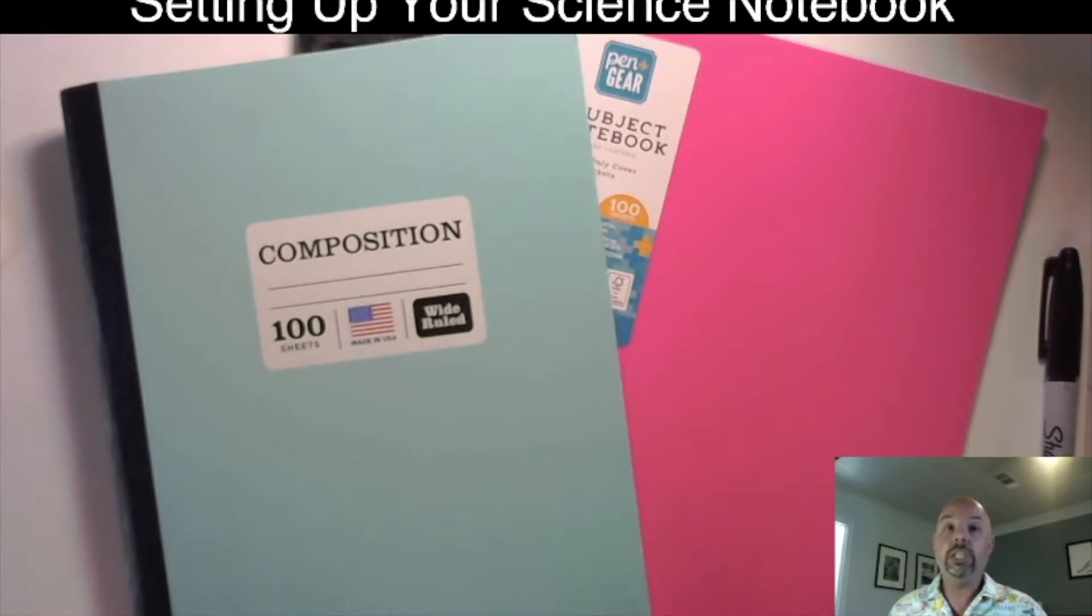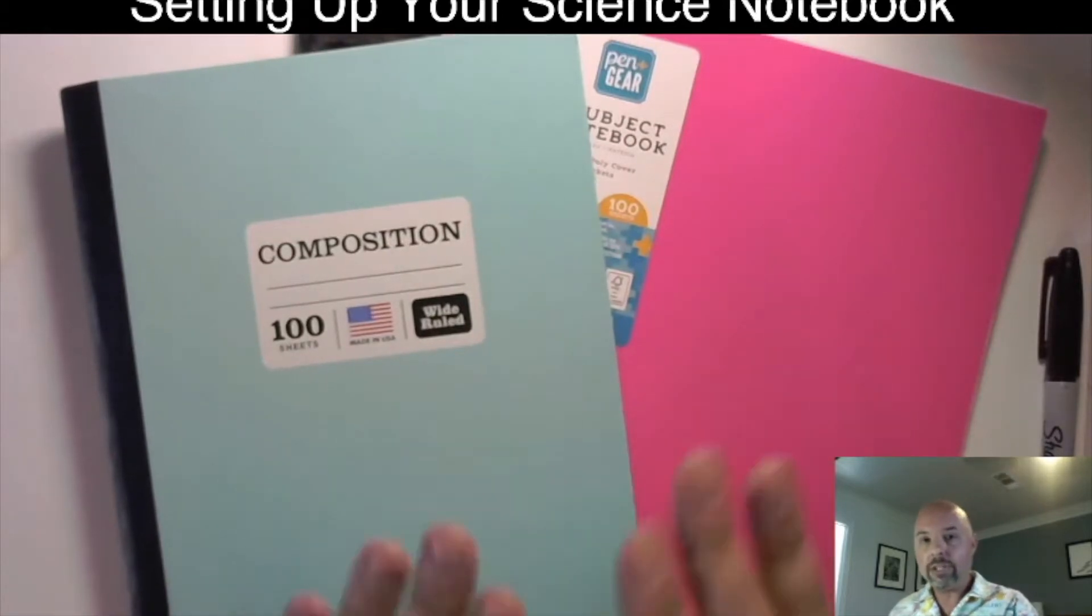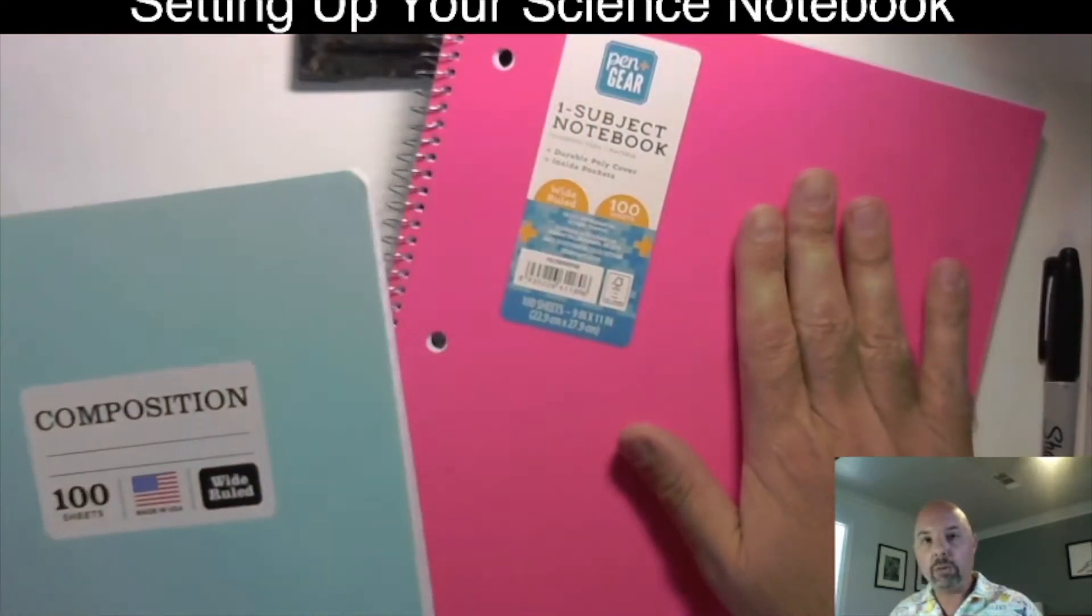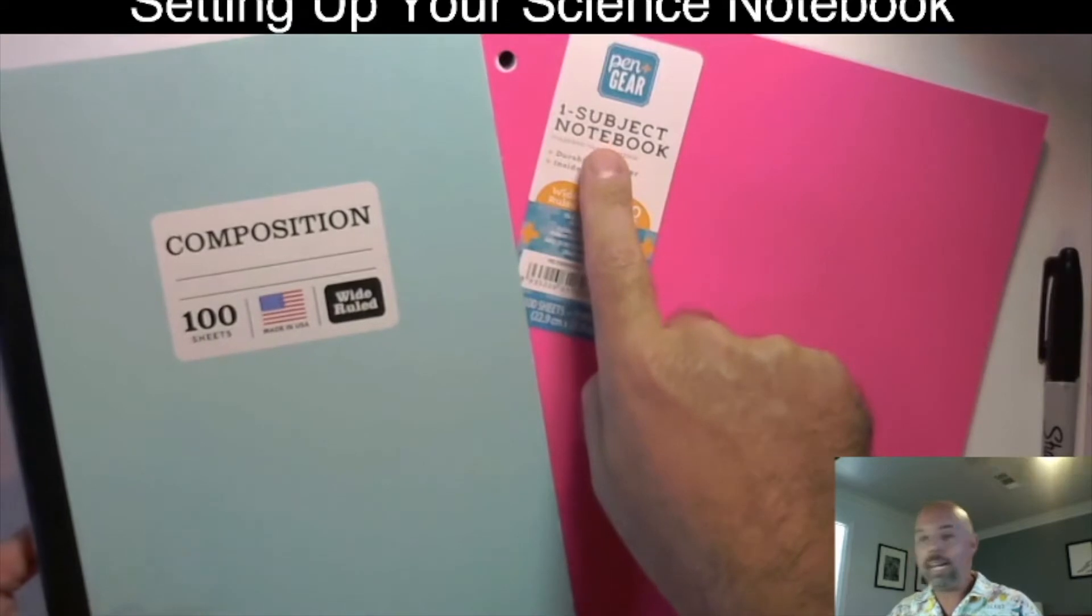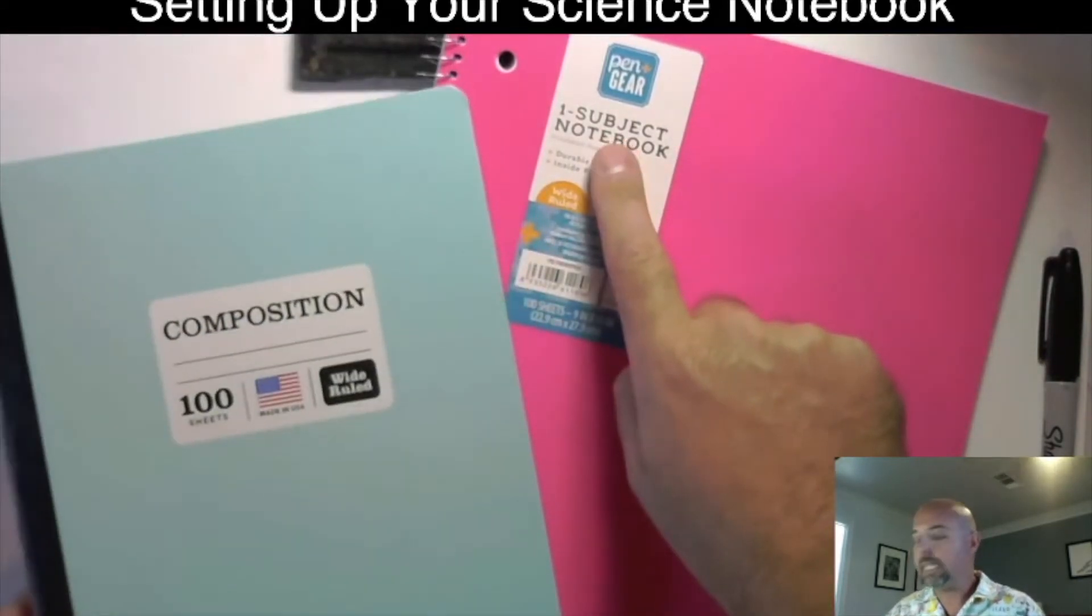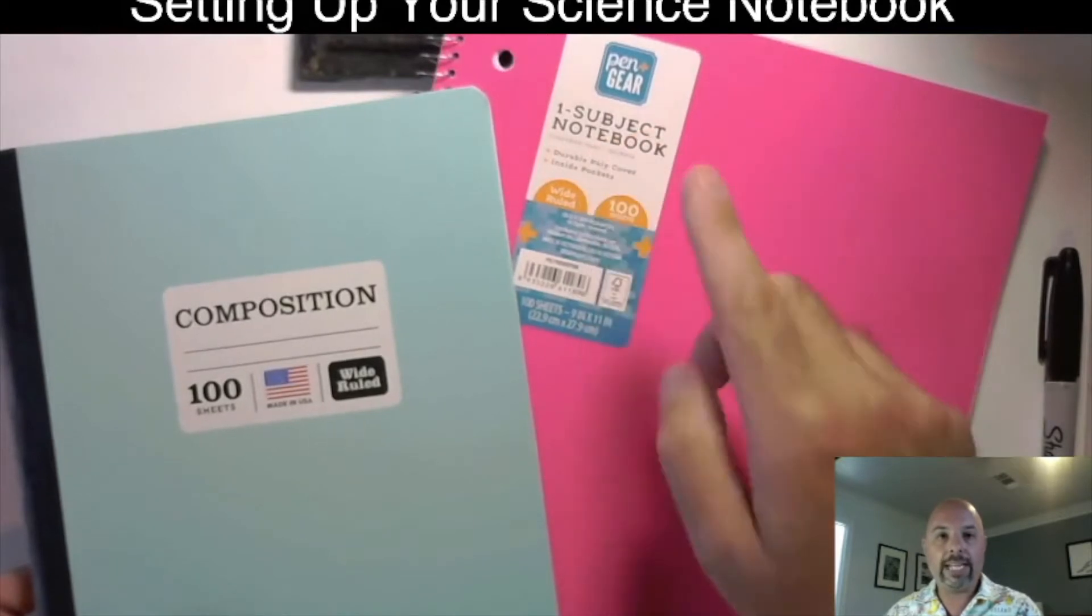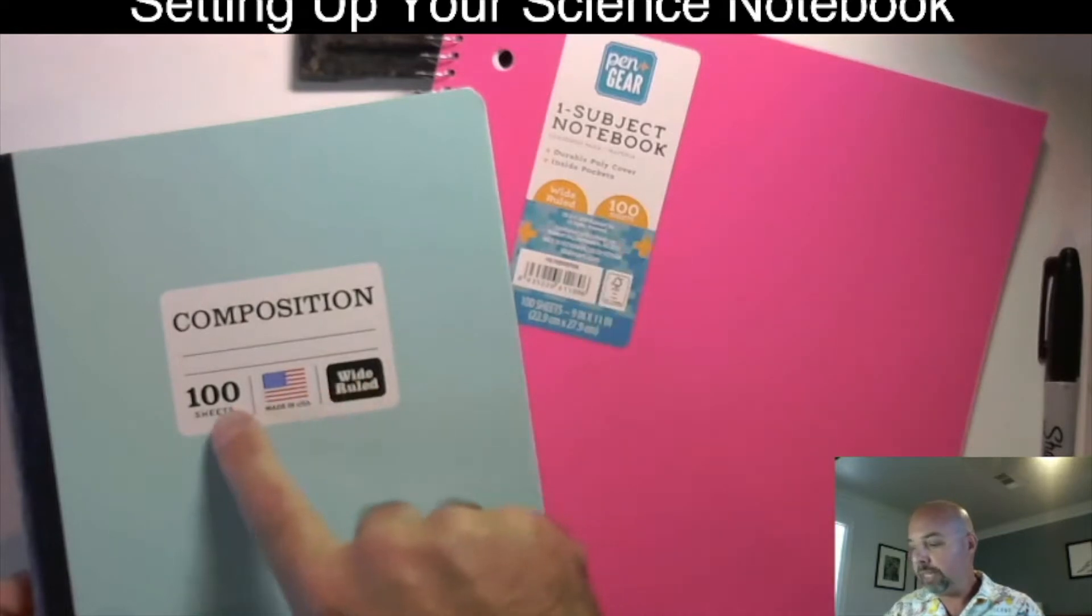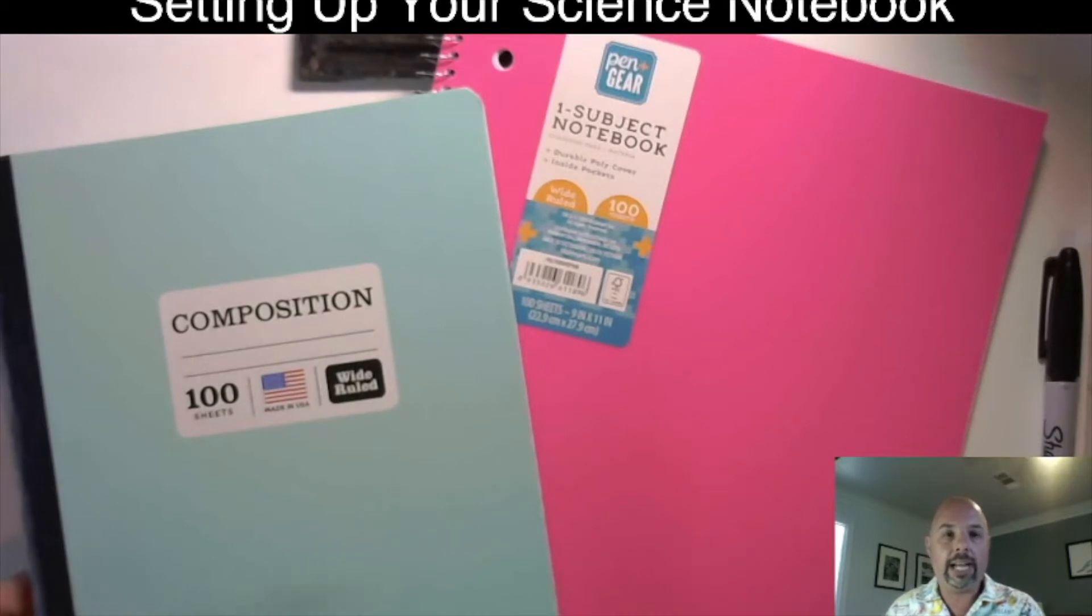First things first, you need a notebook. So I've got two notebooks here. As I mentioned before, I'm fine with either a composition book or a spiral bound notebook. Please make sure that if you get a spiral notebook, it's going to be a single subject notebook. You can see that both of these are 100 sheets. So I think that should be plenty of room for us as we go through. We're going to try our best to fill it up.